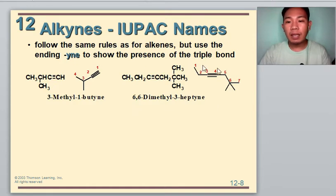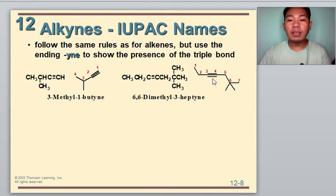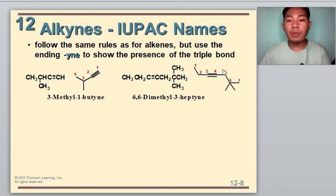Another example is 6,6-dimethyl-3-heptyne. It is heptyne because the longest chain containing the triple bond is composed of seven carbons, and the triple bond is located at carbon three. There are two methyl substituents, so we use di-methyl, and they are located at carbon six, giving the name 6,6-dimethyl-3-heptyne.